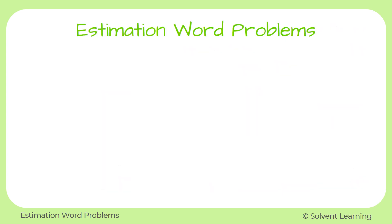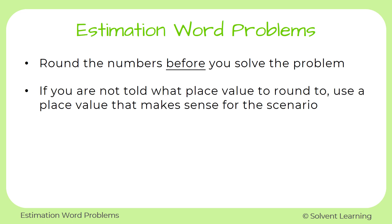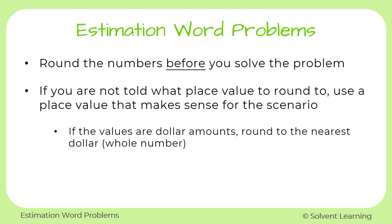To summarize with estimation word problems: we want to round the numbers before we solve the problem. Remember, the whole point is to help us save time and not have to calculate the exact answer first. If you're not told what place value to round to, use a place value that makes sense for the scenario. When working with money, round the values to whole dollar amounts, and then solve the problem from there. Whole dollar amounts are typically the best way to estimate when working with money.